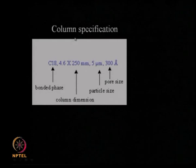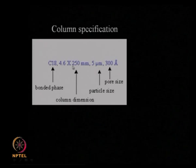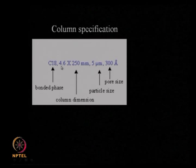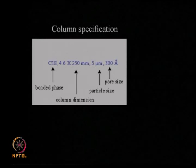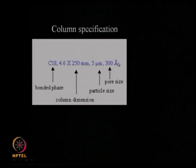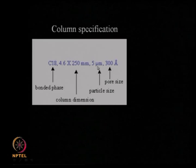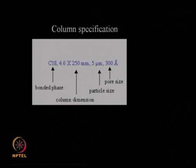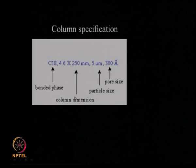A typical column specification might be a C18 column with dimensions of 4.6 mm by 255 mm, a particle size of 5 micron, and a pore size of 300 angstroms. This describes the pore size of the supported particles.